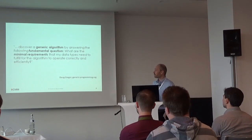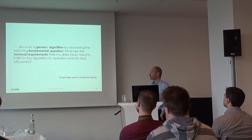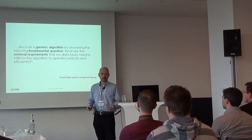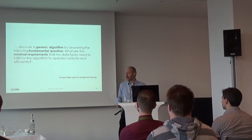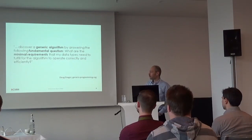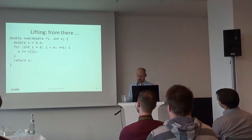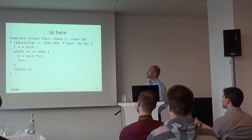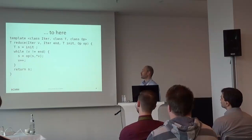The goal of generic programming is to find the minimal requirements for an algorithm. Once we have found the minimal requirements, we have the most general version of the algorithm that could possibly exist. We started from a very simple C-like code that sums an array of doubles, removed dependency and assumption after assumption, and ended up with a fairly generic implementation — more or less the accumulate of the standard library.